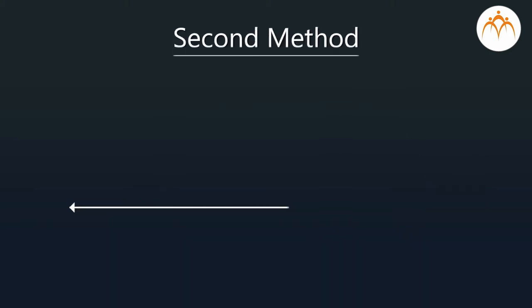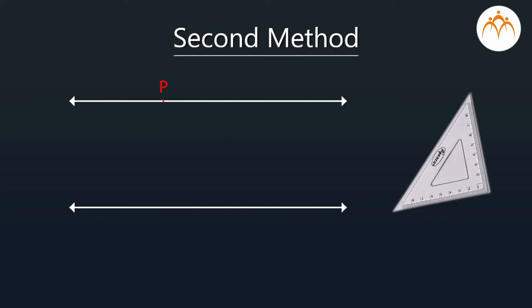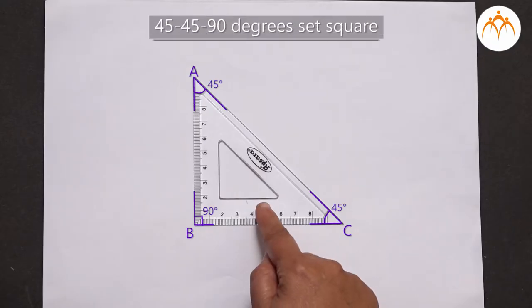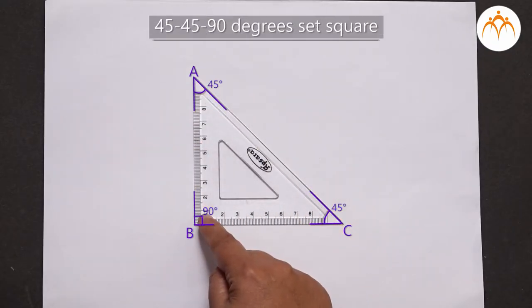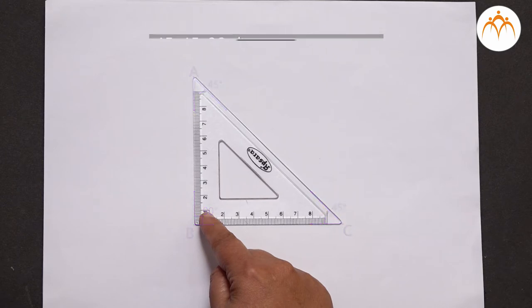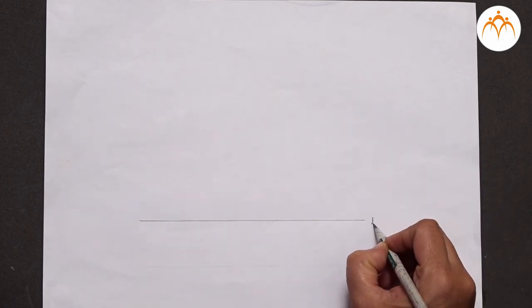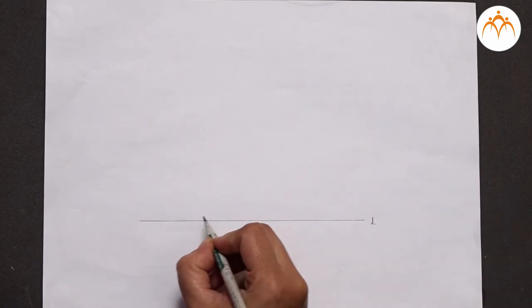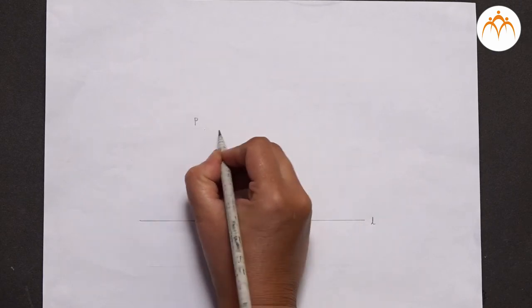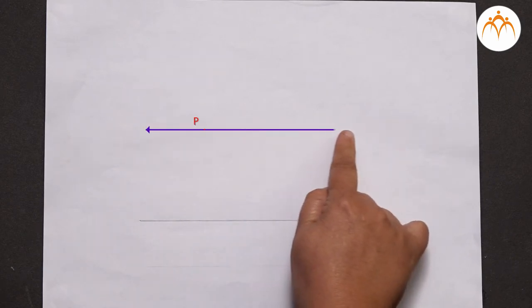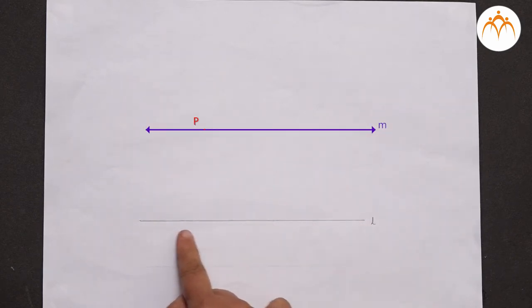Let us learn another method to draw a line M parallel to the given line through a point outside this given line, using a single set square. Let us use the 45-45-90 degrees set square for our construction. Now, we want to draw a line M through the point P such that this line M becomes parallel to the given line L.